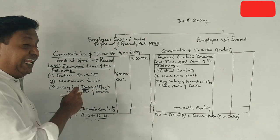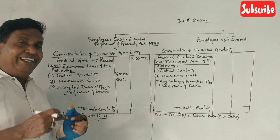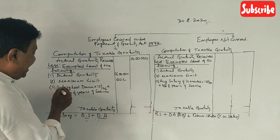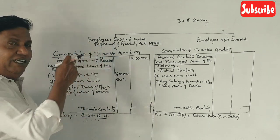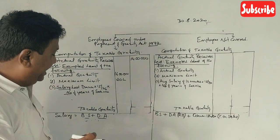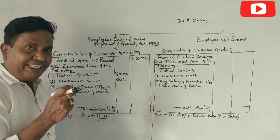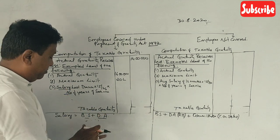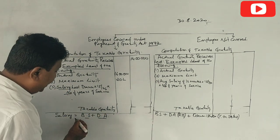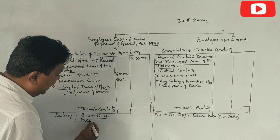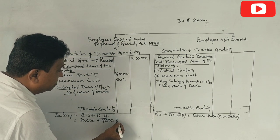The third point: last drawn salary. For an employee covered under the Payment of Gratuity Act, salary means basic salary plus DA. The basic salary is 30,000 rupees and the DA is 9,000 rupees.